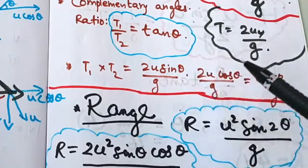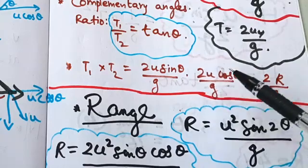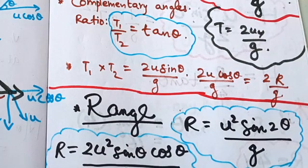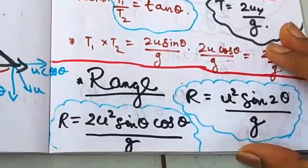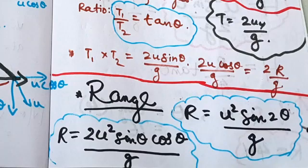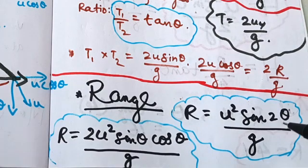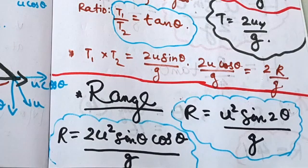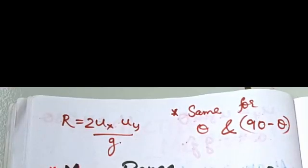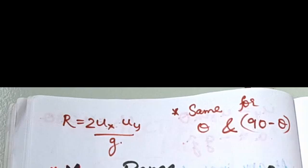R equals u squared sin 2 theta by g. We can also express this as 2 u_x into u_y by g, since sin 2 theta equals 2 sin theta cos theta, giving R equal to u squared sin theta cos theta divided by g, multiplied by 2.